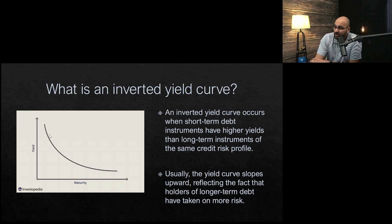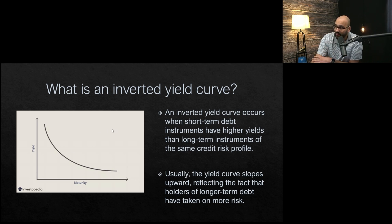An inverted yield curve occurs when short-term debt instruments have higher yields than long-term debt instruments of the same credit risk profile. Usually you'll notice that yield actually increases as time goes on, which reflects the fact that holders of long-term debt have taken on more risk. So this is sort of a backwards situation that tends to be very rare.